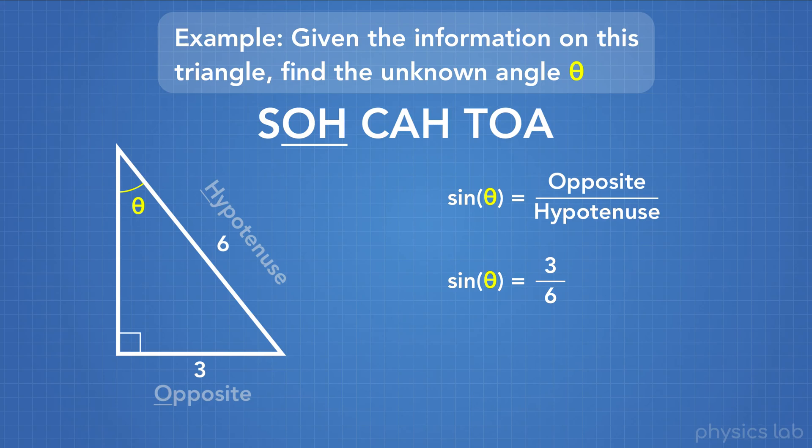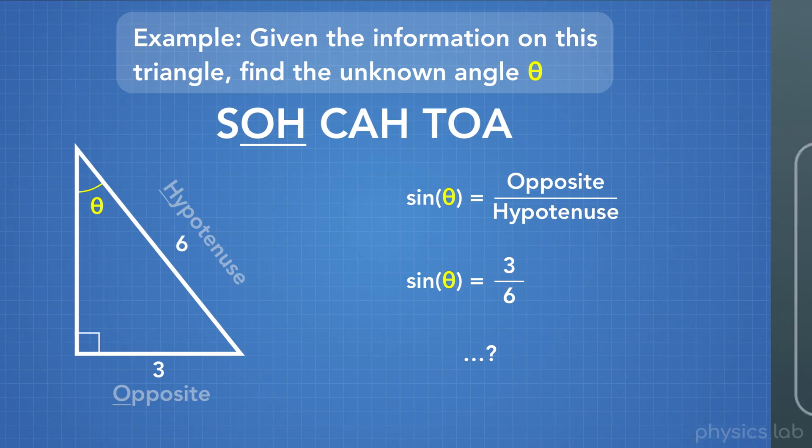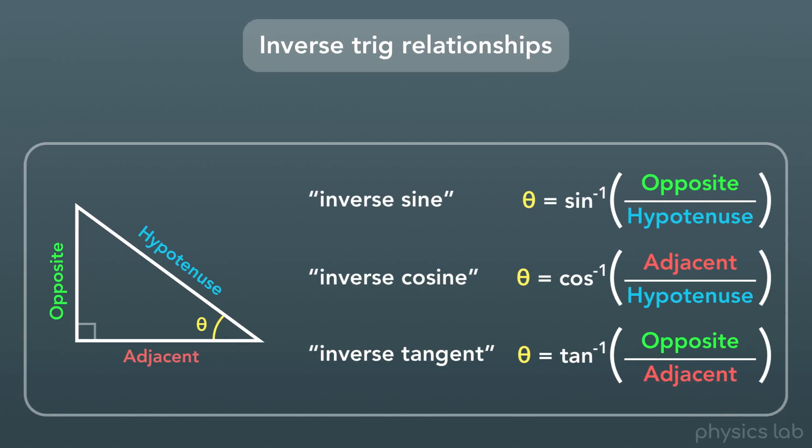And we want to find what theta is. Now what? Well, we can't use this regular trig relationship to find out what the angle is. For that, we need the inverse trig relationships.